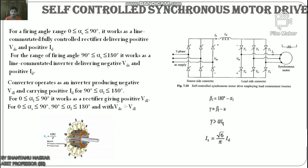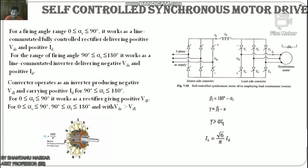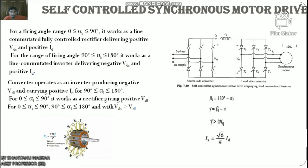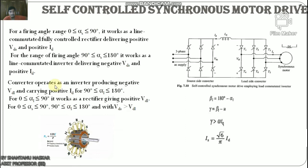When the self-controlled synchronous motor drive operates at a leading power factor, the thyristors of the load-side converter can be commutated by the motor induced voltage, in the same way as thyristors of a line-commutated converter are commutated by line voltage. Commutation of thyristors by the induced voltage of the load (here, the motor) is known as load commutation. The firing angle is measured by comparison of induced voltage similarly to comparison of line voltages in a line-commutated converter. The converter operates as an inverter producing negative Vd1 and carrying positive Id for α1 in range 90° to 180°.